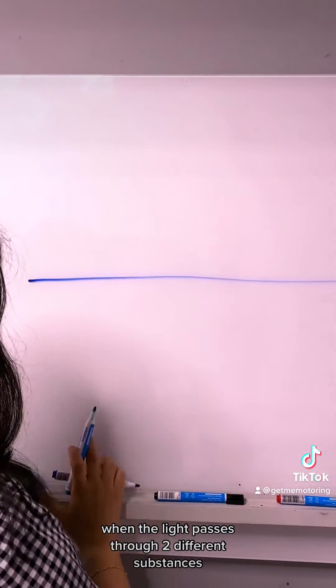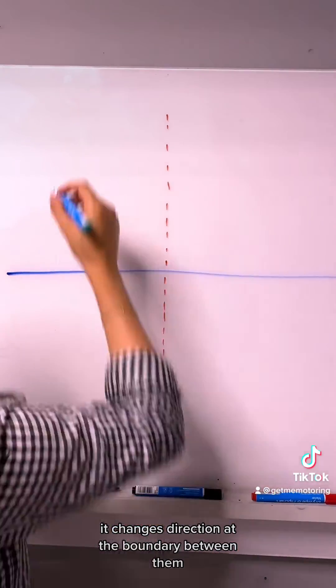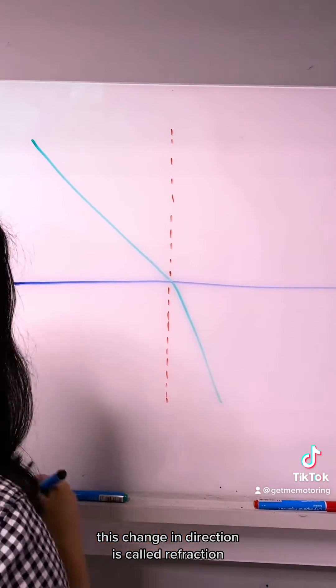When the light passes through two different substances, it changes direction at the boundary between them. This change in direction is called refraction.